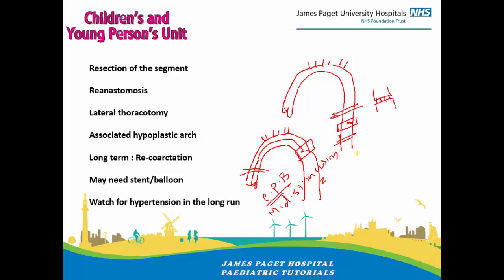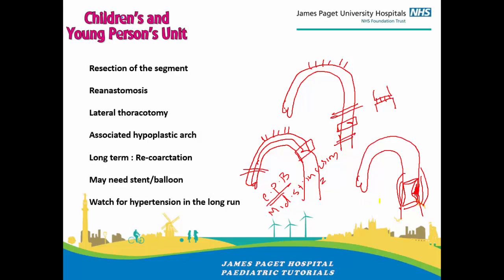For an adult with coarctation who didn't present until, say, 10 or 20 years of age with a minor coarctation — perhaps with some collaterals keeping things going — you don't need to operate. If they're hypertensive you need to fix it, so you would do a balloon and stent to open that up. This is done through a cardiac catheter by a cardiologist, not a surgeon — much less traumatic, potentially done as a day case. So depending on severity and age of presentation, the treatment can be completely different.